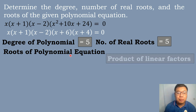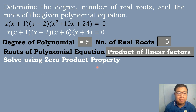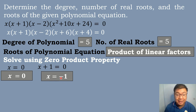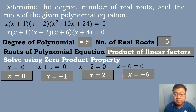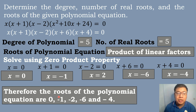Since this is expressed as a product of linear factors, we solve using zero product property. Equating each factor to zero: x = 0 (first root); x + 1 = 0 gives x = −1 (second root); x − 2 = 0 gives x = 2 (third root); x + 6 = 0 gives x = −6 (fourth root); x + 4 = 0 gives x = −4 (fifth root). Therefore, the roots of the polynomial equation are 0, −1, 2, −6, and −4.